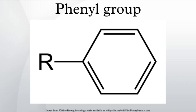Preparation, occurrence, and applications: phenyl groups are usually introduced using reagents that behave as sources of the phenyl anion or phenyl cation. Representative reagents include phenyllithium and phenylmagnesium bromide. Electrophiles attack benzene to give phenyl derivatives: C6H6 + E+ → C6H5E + H+, where E+ equals Cl+, NO2+, or SO3.